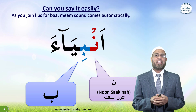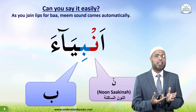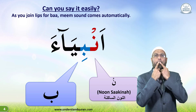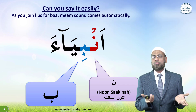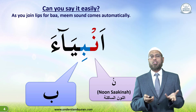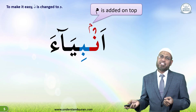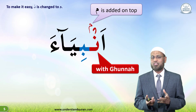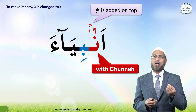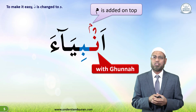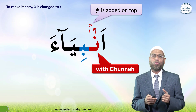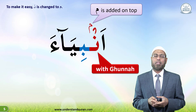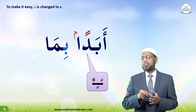Let's take the fourth rule. In 'anbia', after saying 'an', as you join your lips for saying 'ba', a meem sound comes automatically. So what they did is change it to meem to make it easy — noon sakinah is changed to meem. Instead of saying 'anbia' you just say 'ambia', and a small meem is added on top. The only thing is we should do it with ghunna — that is, stretch double with nasal sound: 'ambia'.